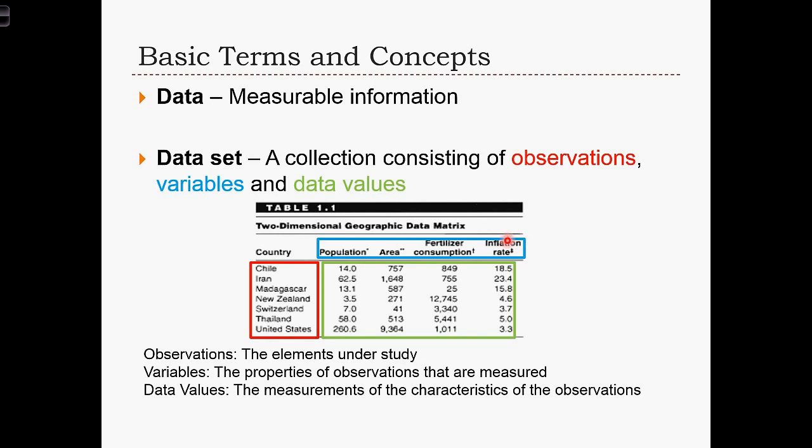And then finally, in this green box, are the data values. The values are the actual numerical measurements that we are making. So the data value for Madagascar's area is 587.